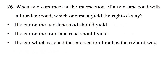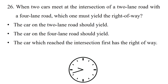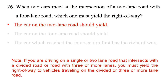Question: When two cars meet at the intersection of a two-lane road with a four-lane road, which one must yield the right-of-way? Option 1: The car on the two-lane road should yield. Option 2: The car on the four-lane road should yield. Option 3: The car which reached the intersection first has the right-of-way. If you are driving on a single or two-lane road that intersects with a divided road or road with three or more lanes, you must yield the right-of-way to vehicles traveling on the divided or three-or-more-lane road.